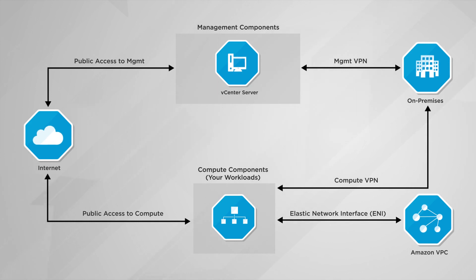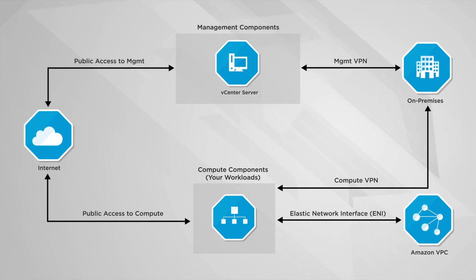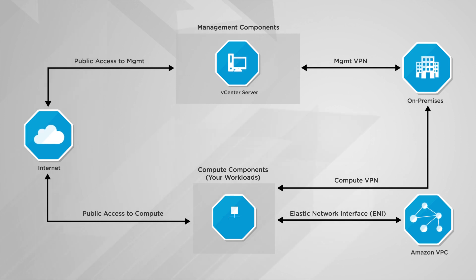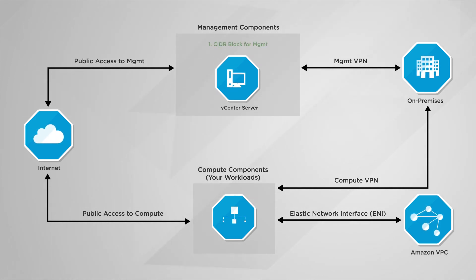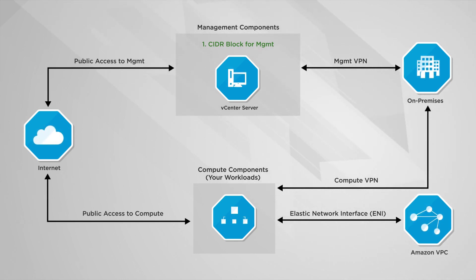In a previous video, we talked about the network framework of a VMware Cloud on AWS SDDC and how it provides connectivity between your on-premises datacenter, your Amazon VPC, and the Internet. In this video, we will go over the information you'll need to get the most out of VMware Cloud on AWS on Day 1. The first bit of information required is a classless inter-domain routing, or CIDR block, to provide IPs for the SDDC management components, which are managed by VMware, like your ESXi hosts and your vCenter server.